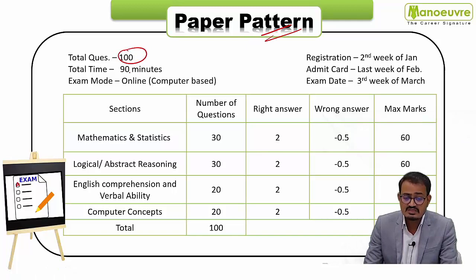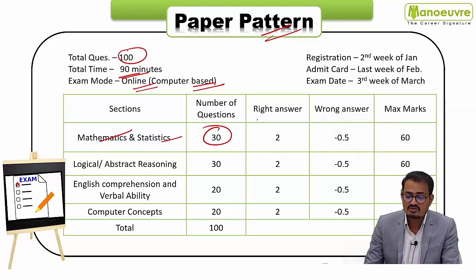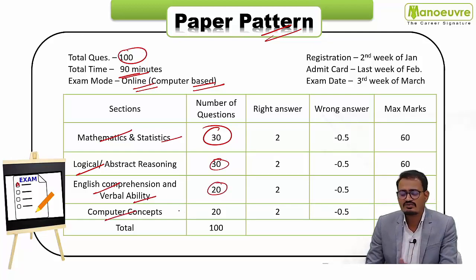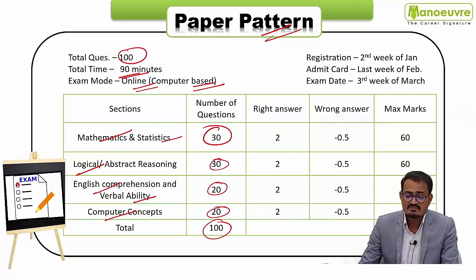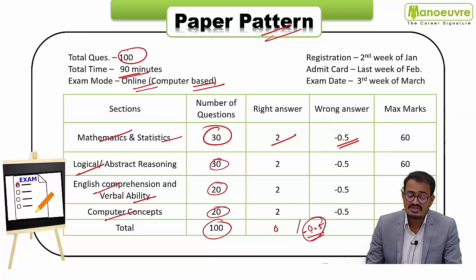Now let's talk about the paper pattern. Total questions are 100, total time duration is 90 minutes, and the exam mode is online — computer-based. The sections are: Mathematics and Statistics — 30 questions; Logical and Abstract Reasoning — 30 questions; English Comprehension and Verbal Ability — 20 questions; and Computer Concepts — 20 questions. Overall 100 questions for 200 marks, meaning +2 marks for each correct answer and minus 0.5 marks for each incorrect answer.